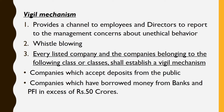Next is vigil mechanism, an important term in the Companies Act. Vigil mechanism means it helps to detect and prevent fraud or misconduct in the organization. It provides a channel to employees and directors to report to the management concerns about unethical behavior — it is also known as whistle blowing. Every listed company and companies belonging to the following classes shall establish a vigil mechanism: companies which accept deposits from the public, and companies which have borrowed money from banks and public financial institutions in excess of Rs. 50 crores.